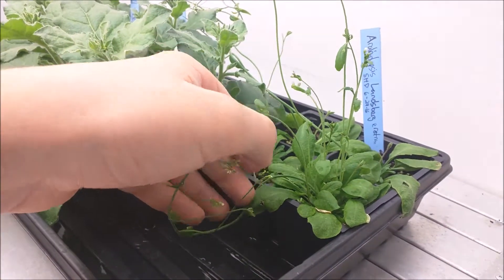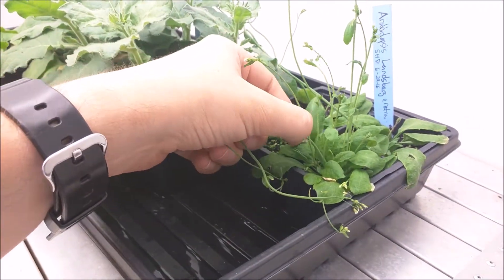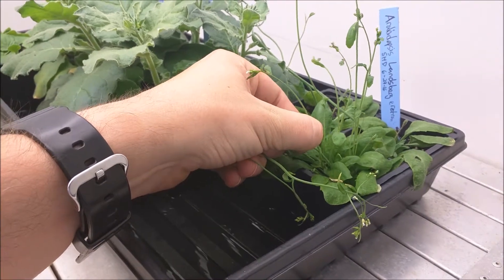Today we're going to transform Arabidopsis with Agrobacterium. We need just-opened flowers, so if yours are too old, you can remove the stems and they'll grow back.